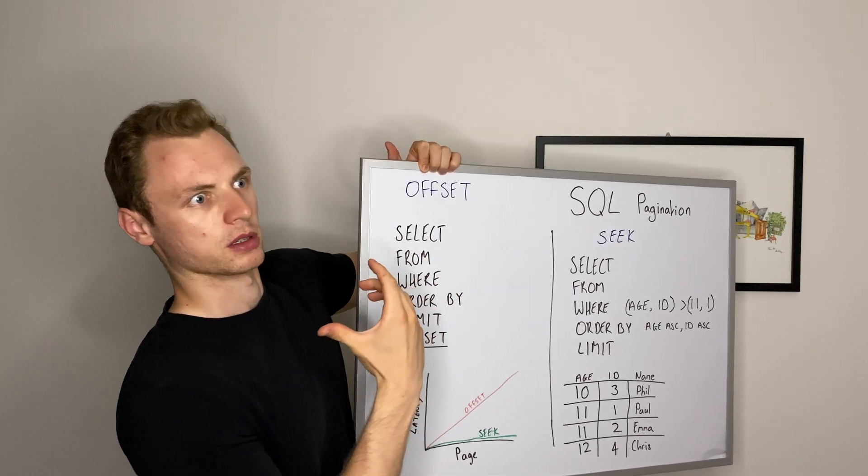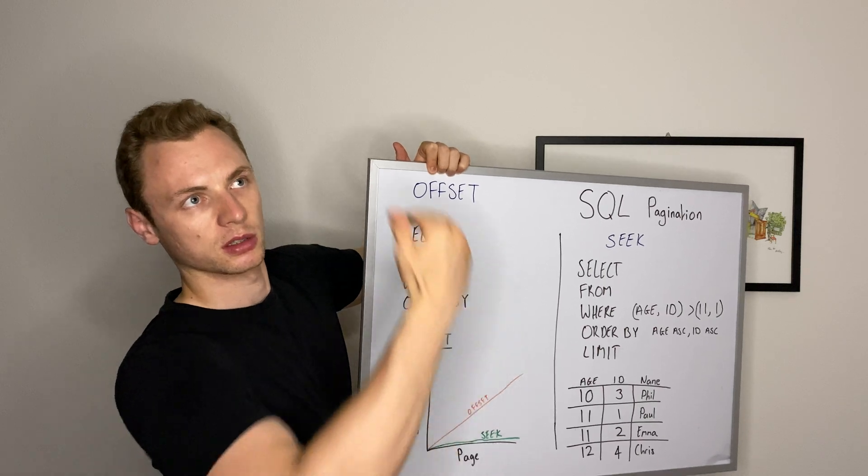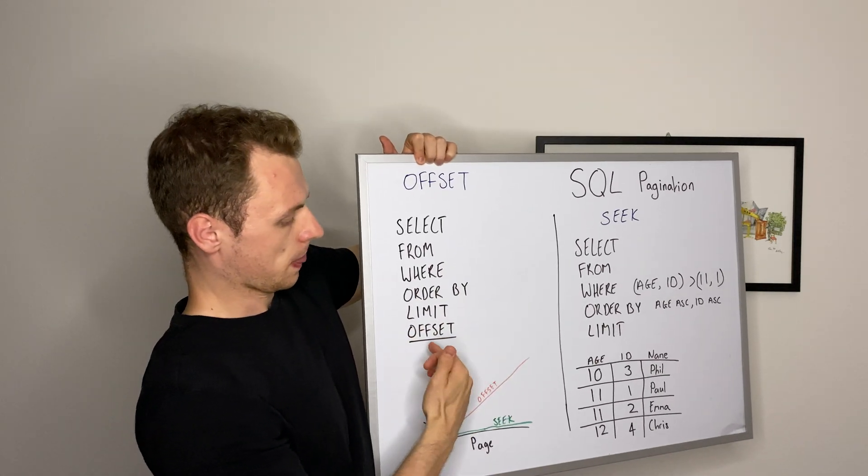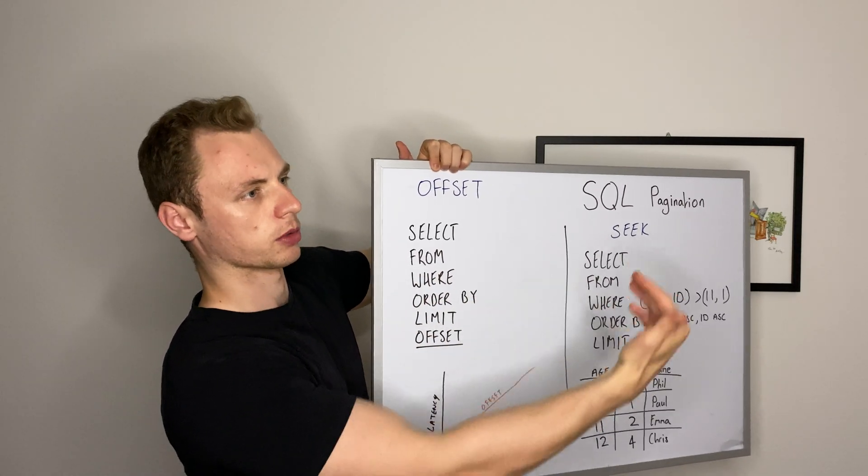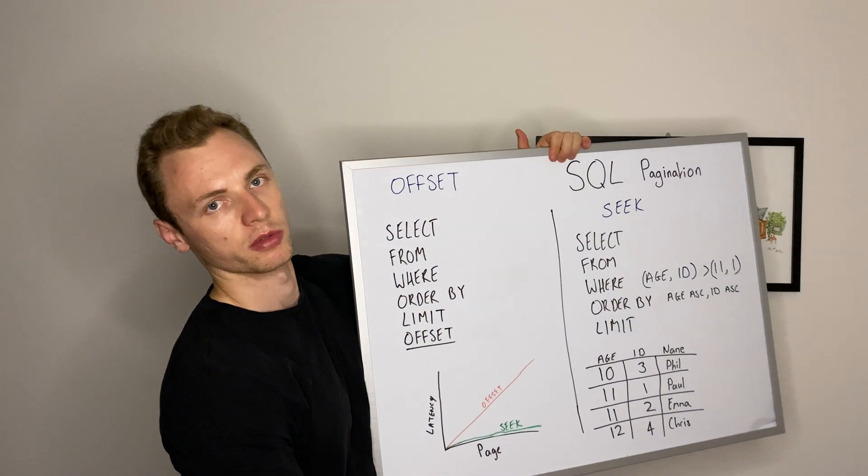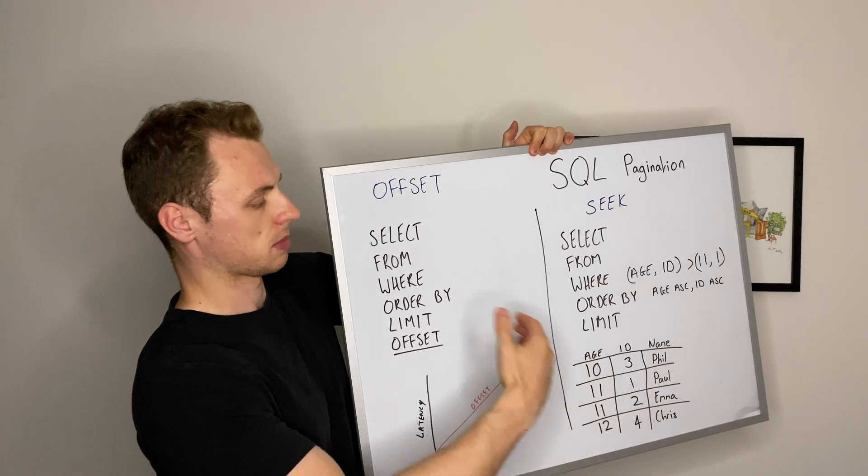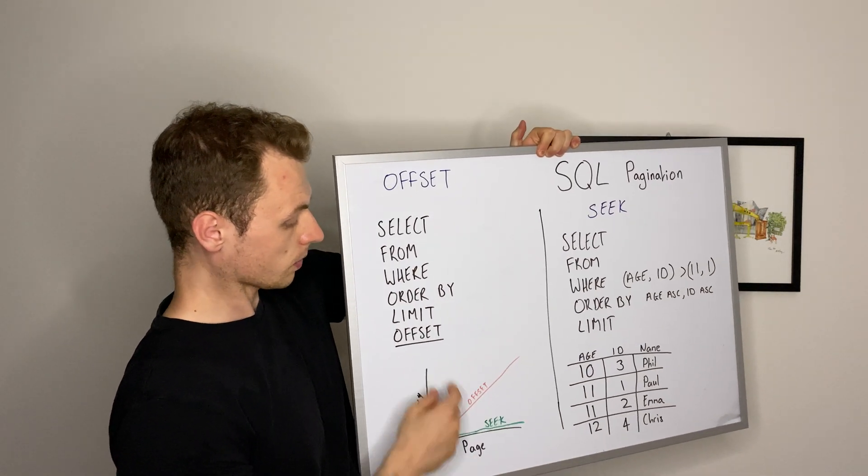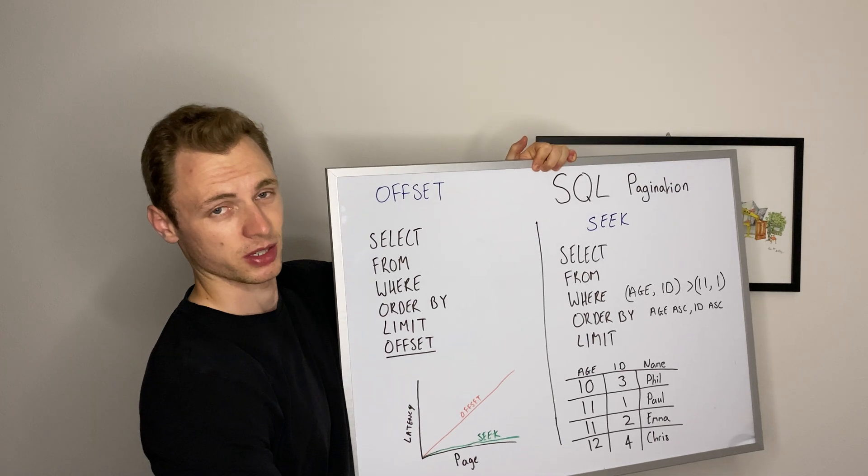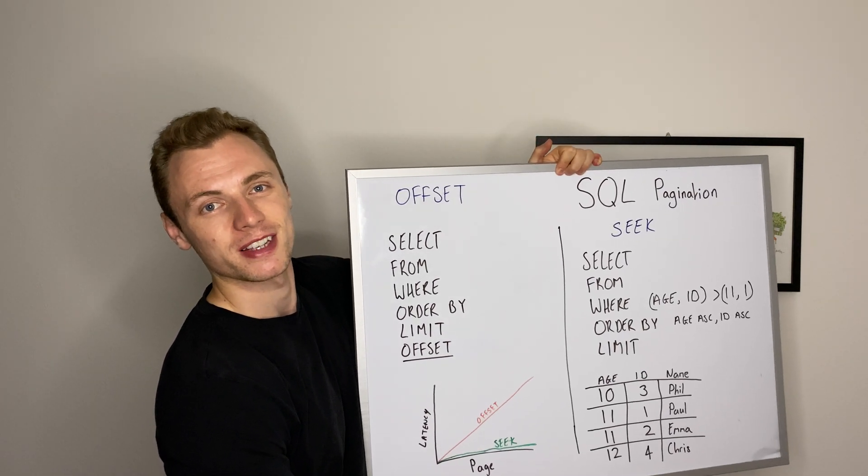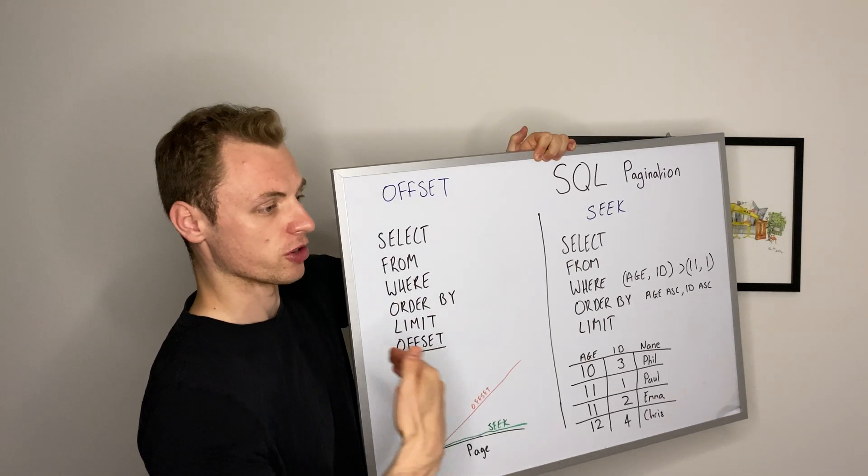What you'll actually do is the limit represents the size of the page, so you can think of it as a Google page with like 20 results. And the offset is what page you're actually on. So if you're on the third page, maybe you want to offset, if there's 20 results, 60 records based on your condition. Why this is slow, which is the disadvantage, is it is slow as you progressively...